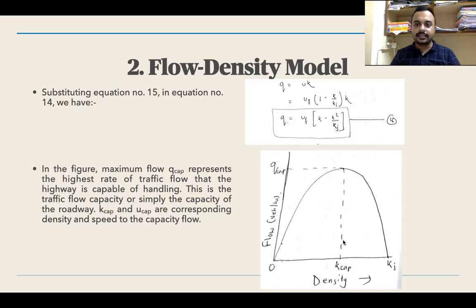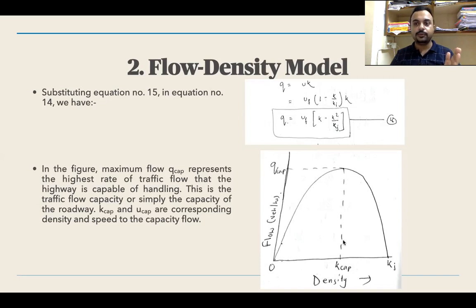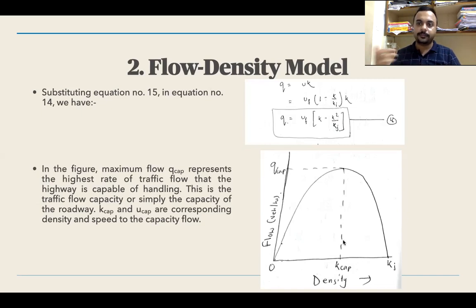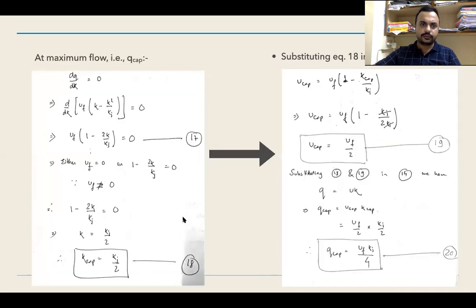At the capacity point, the speed is known as u_cap and the density at that point is known as k_cap. Since q = u·k, it follows that q_cap = u_cap × k_cap. We will now derive the values of u_cap and k_cap.